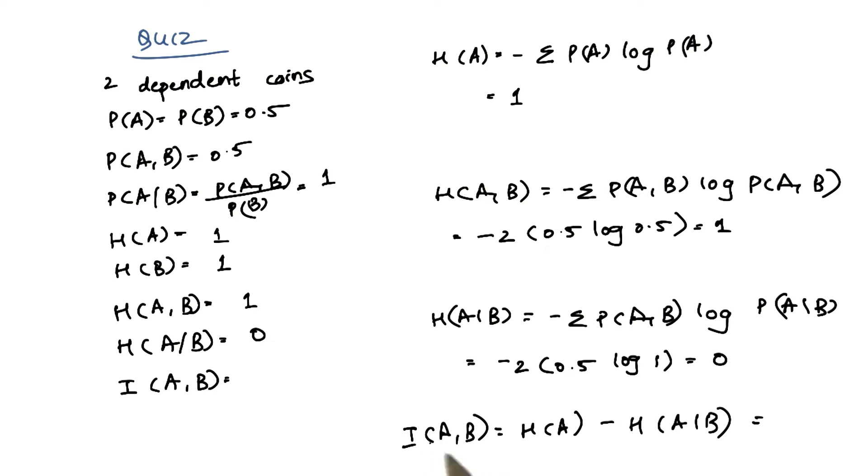What is the mutual information between A and B? Subtract the entropy of A and the conditional entropy of A given B, which is 1 minus 0, which is 1.